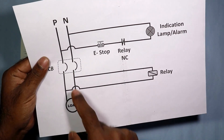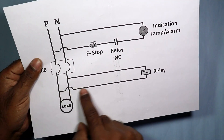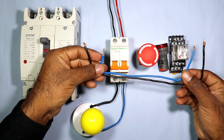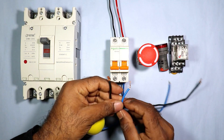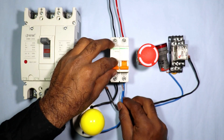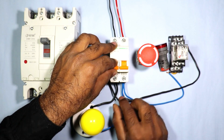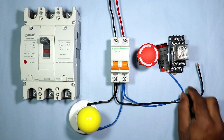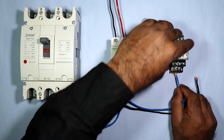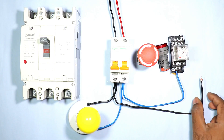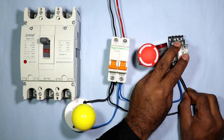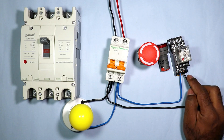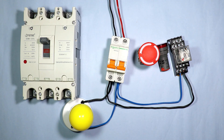The load power supply which goes from the MCB output — we have to connect this with the relay using two wires. Take these wires and connect them to the output terminals of the MCB. Connect the blue wire with the phase supply and the black wire with the neutral. Then connect the blue wire to terminal 13 and the black wire to terminal 14 of the relay coil.